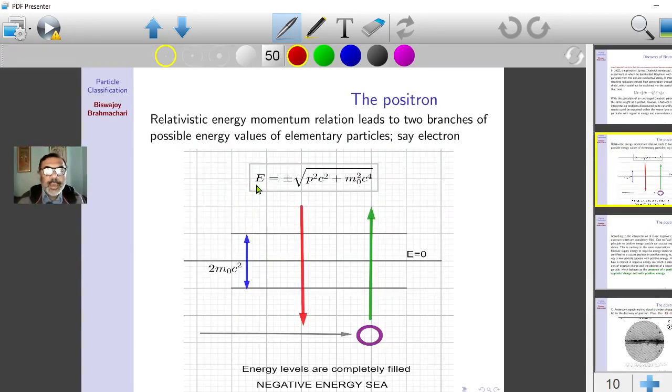Here is the relativistic energy-momentum relation: E² = p²c² + m₀²c⁴. We have taken the square root, so we have a plus or minus sign: E = ±√(p²c² + m₀²c⁴). If we have not neglected the minus sign, this is what will lead to the negative energy states.